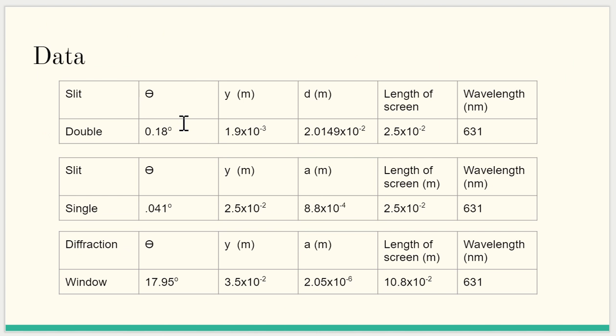Now for our data. This is what we calculated from our calculations. We got a wavelength of 631 nanometers experimental. We also got the length of the screen for each one, along with the thickness of their slits for single, diffraction, and double slit, and our y values for each one along with their theta.